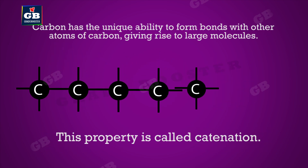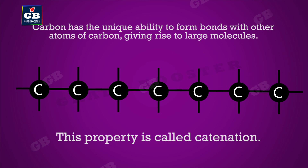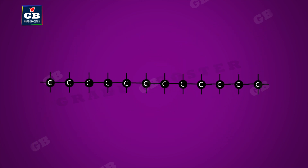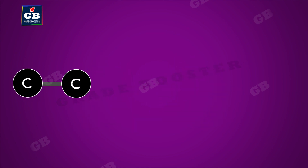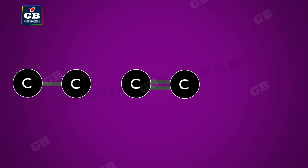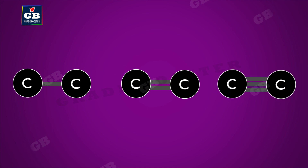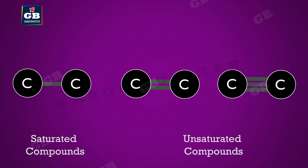Carbon has the unique ability to form bonds with other atoms of carbon, giving rise to large molecules. This property is called catenation. These compounds may have long chains of carbon, branched chains of carbon, or even carbon atoms arranged in rings. In addition, carbon atoms may be linked by single, double, or triple bonds.